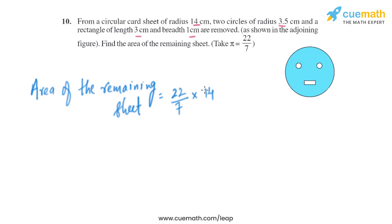And we need to subtract two times, as there are two circles, 22 by 7 into 3.5 squared, and we also need to subtract the area of the rectangle, that is 3 into 1.